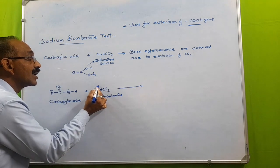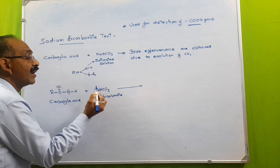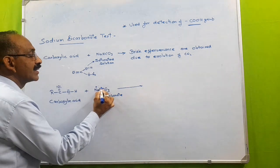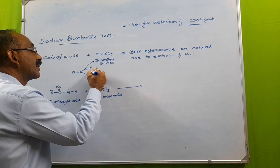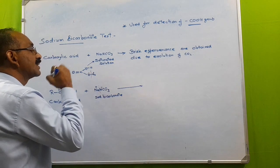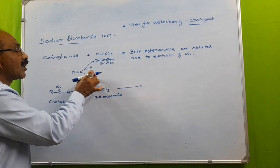Sodium bicarbonate here dissociates and forms Na+ ion and bicarbonate ion. See, this bond breaking occurs. This one is an ionic bond, so O-Na bond breaking occurs.